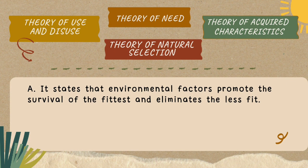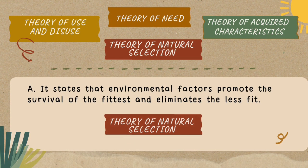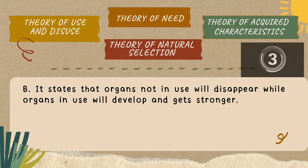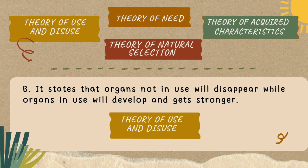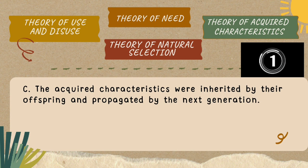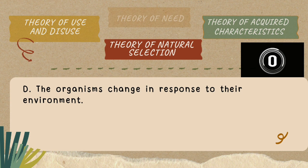Let us test our knowledge. Describe the different theories of evolution by matching each theory with its corresponding description. It states that environmental factors promote the survival of the fittest and eliminate the least fit. It states that organs not in use will disappear while organs in use will develop and get stronger. Acquired characteristics were inherited by offspring and propagated to the next generation. Organisms change in response to their environment.